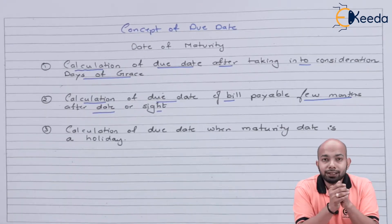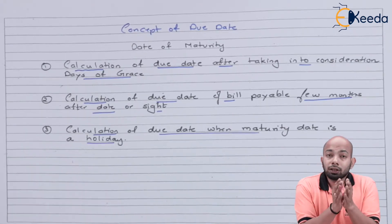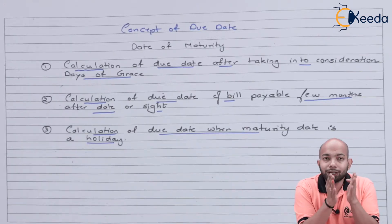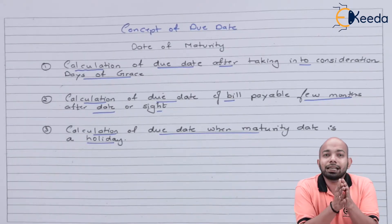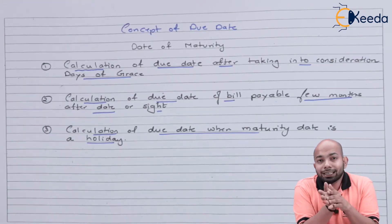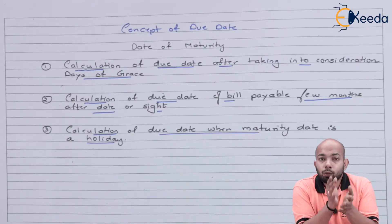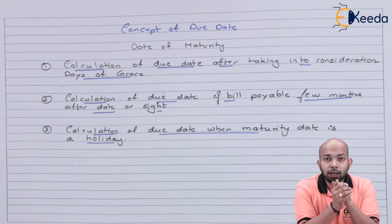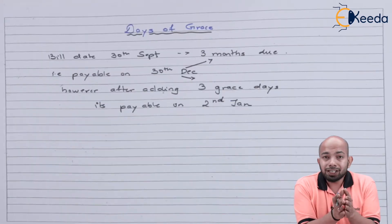The third situation is when you have to calculate the due date when the maturity date itself falls on a public holiday. If the due date lies on a public holiday, we need to determine what the due date should be taken as. Let's now discuss the first situation.